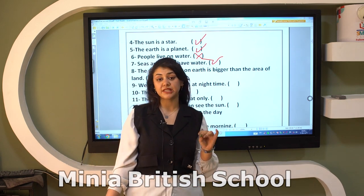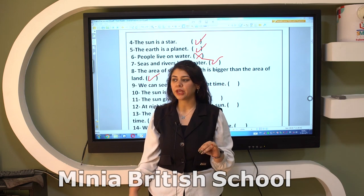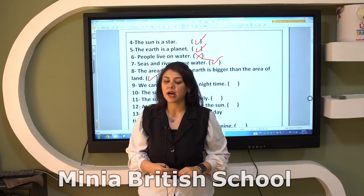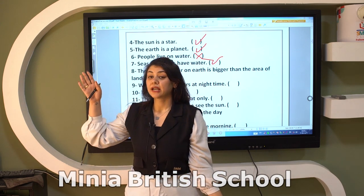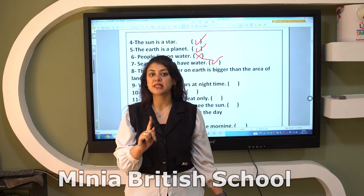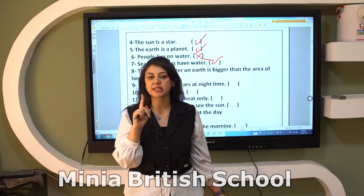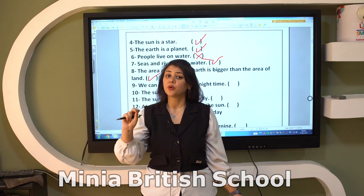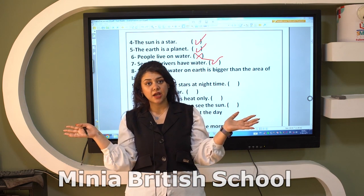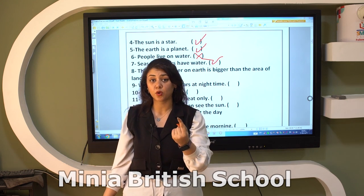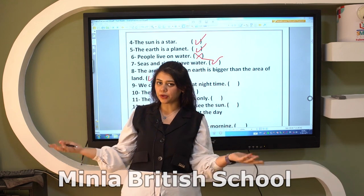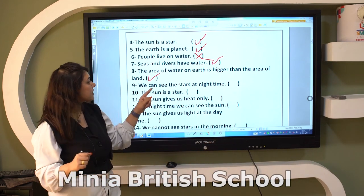Number nine: can we see stars at nighttime? Yes! At nighttime we can see the moon and stars. At daytime we can see the Sun and clouds. The Sun is a star, but at daytime we can only see one star called the Sun. At daytime we see the Sun, not other stars. So we can see stars at nighttime — true.